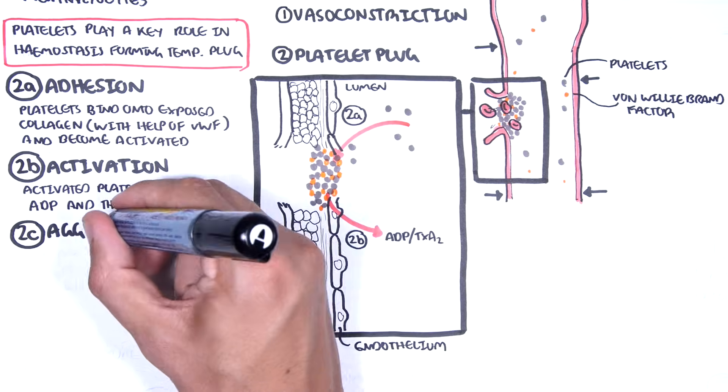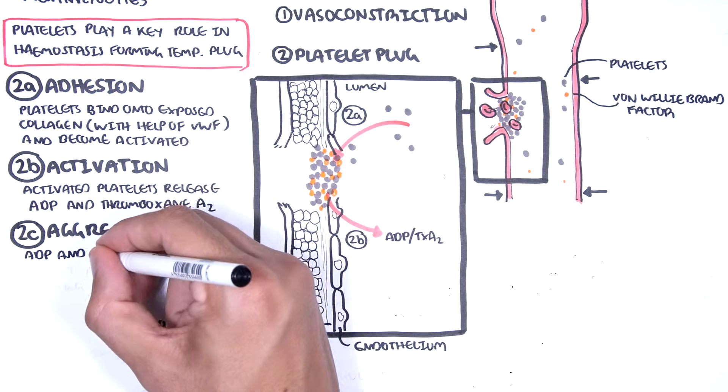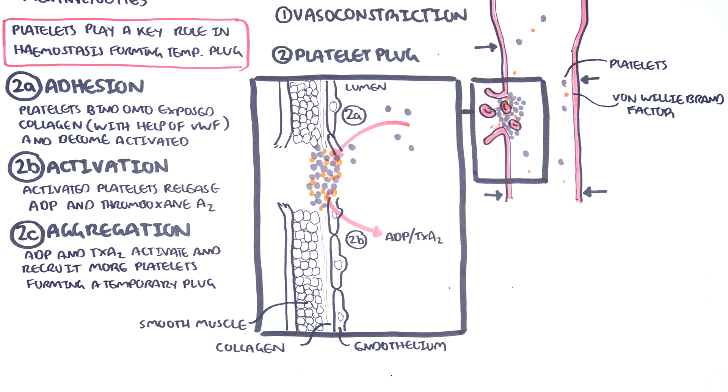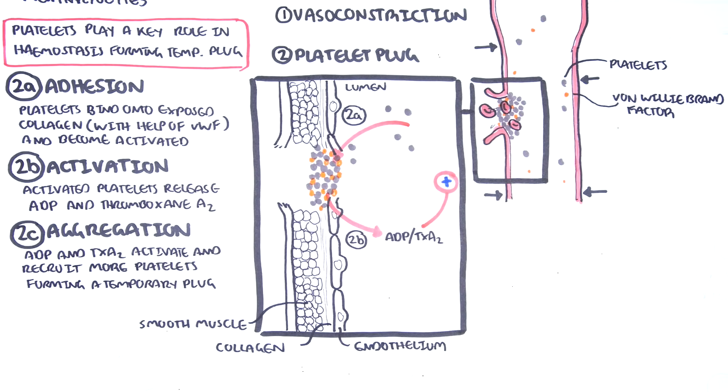This will lead to platelet aggregation. Thromboxane A2 and ADP recruit more platelets, which in turn recruits more and more platelets, forming the temporary platelet plug.